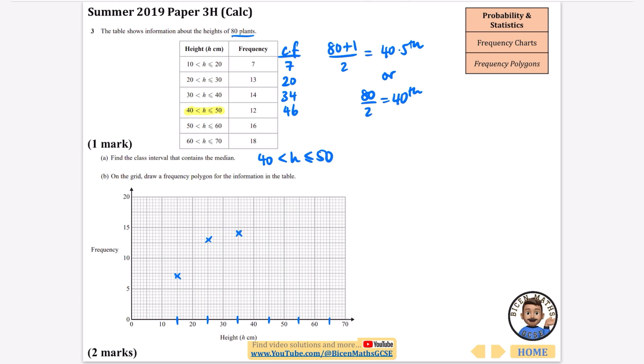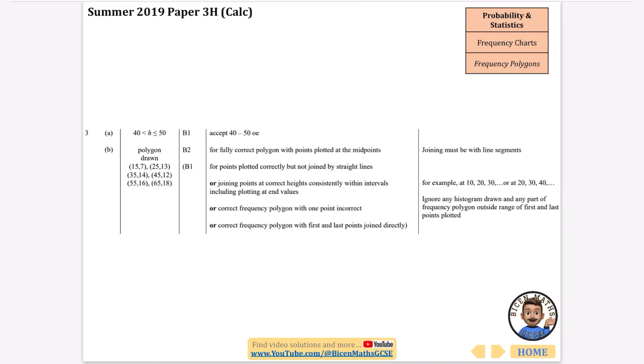Then we're going to do 12, so that is 10, 11, 12, each time I'm counting one I'm counting two squares. We're then going to have 16 which is here, and then 18 for the last one, so that is going to be at this point. Okay we then just join them together using a ruler, luckily my app is going to do them as a ruler, and that's our frequency polygon drawn. Okay so we did get the correct interval here and these are the different points that should be drawn.